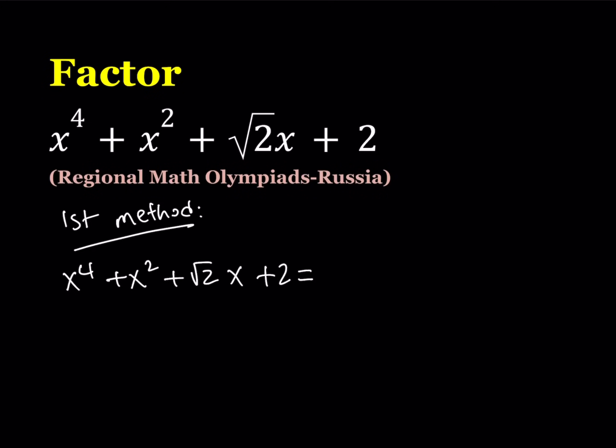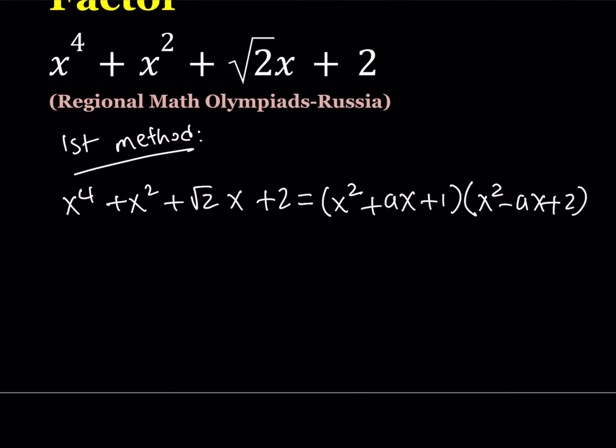Now, notice that the term with x cubed is missing, so that means we can write it as x squared plus ax plus one multiply by x squared minus ax plus two. Of course, it doesn't always work. Maybe it's not one times two, it's something else, but since this is factorable, we're looking for something nice. If one and two, positive one and positive two, don't work, then I will try negative one and negative two because that's another option.